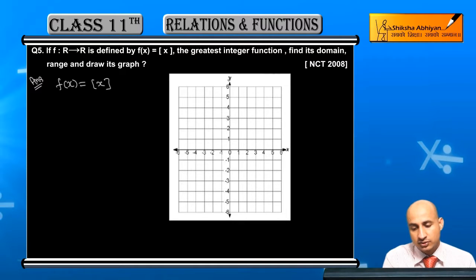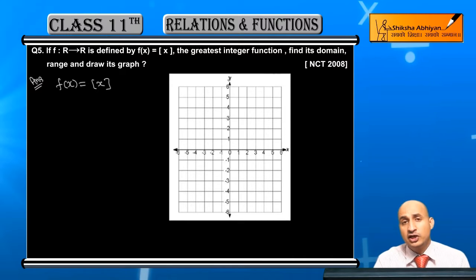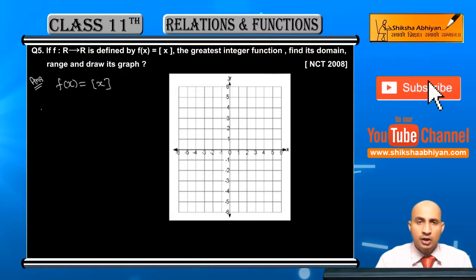This is the greatest integer function. In the greatest integer function, for any real number, we take the nearest integer that is less than or equal to that number. So we write that.